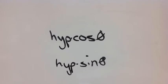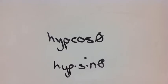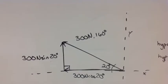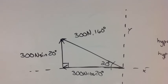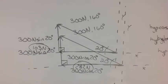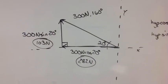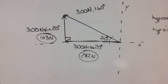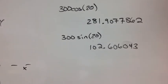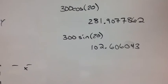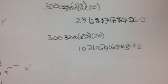All you have to do is multiply the hypotenuse times the cosine of the angle and the hypotenuse times the sine of the angle. You do that and you get these values as shown: 103 newtons and 282 newtons. Just take the hypotenuse times the cosine of the angle, then the sine of the angle, to get those two values.